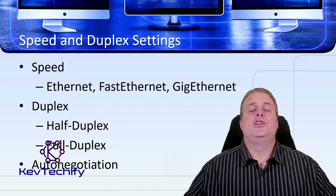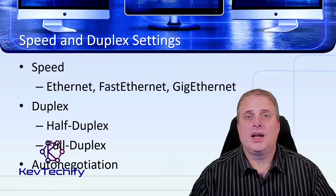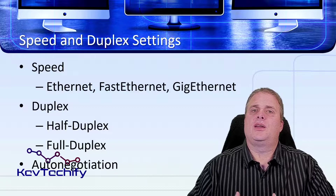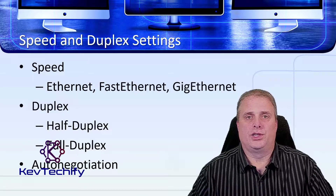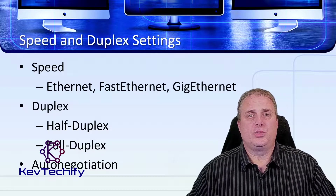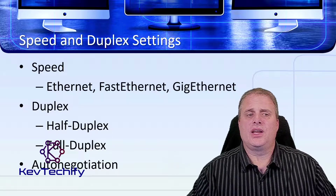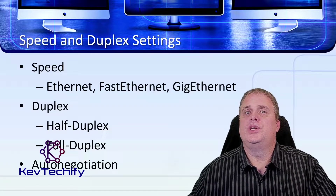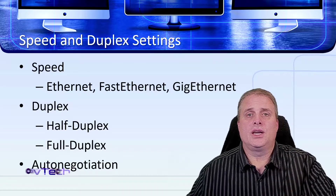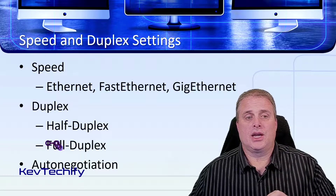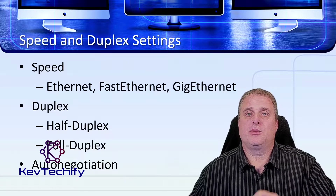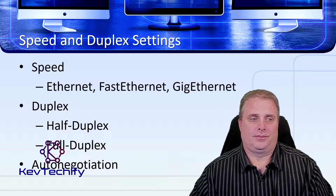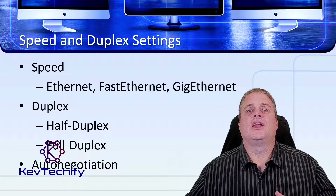Switches have different speed and duplex settings. The speed is typically dictated by the model of switch you're buying. The typical speeds we see connecting to end devices nowadays are Ethernet, Fast Ethernet, and Gigabit. In data centers we do see 10 Gigabit. Ethernet is 10 megabits per second, Fast Ethernet is a maximum of 100 megabits per second, and Gigabit is a maximum of 1 gigabit per second.